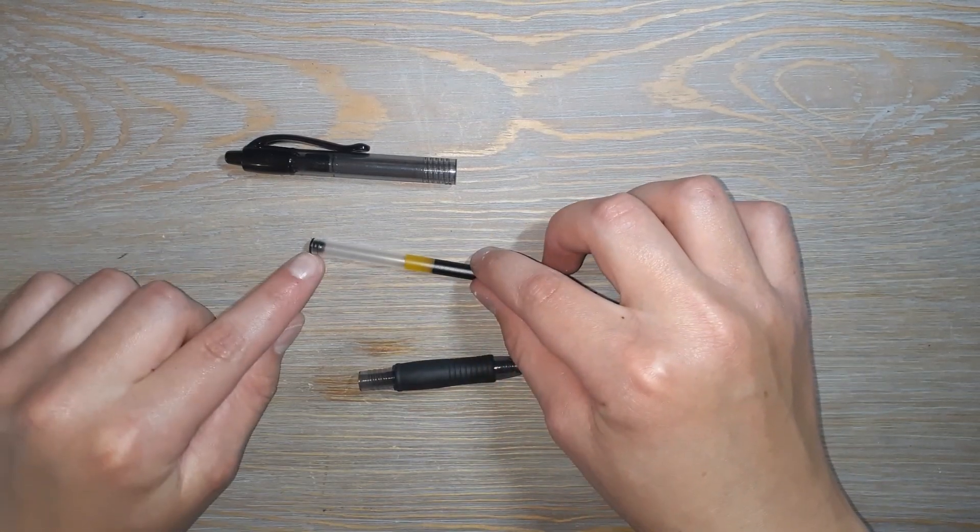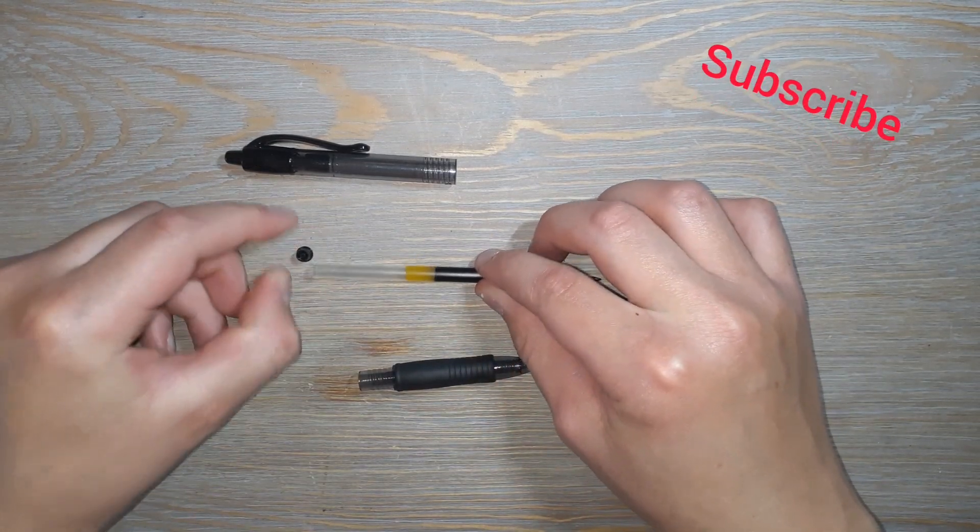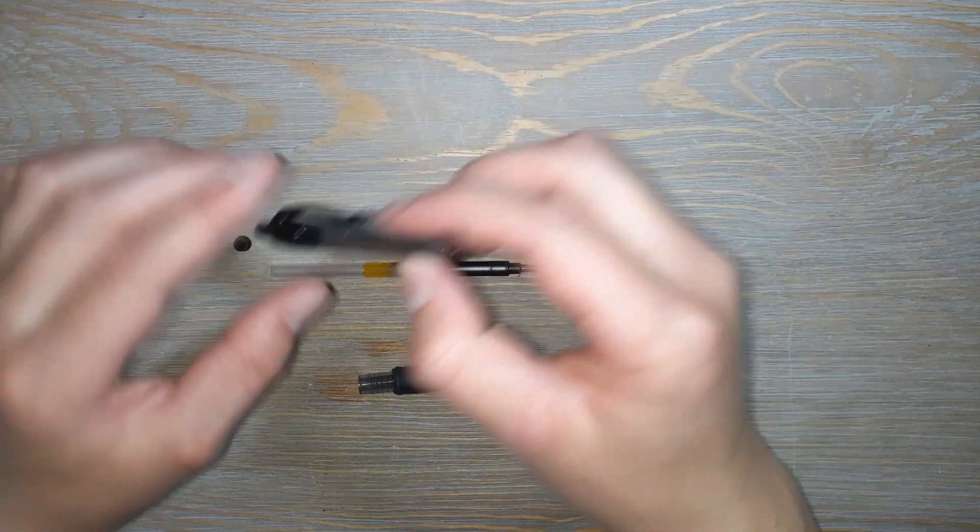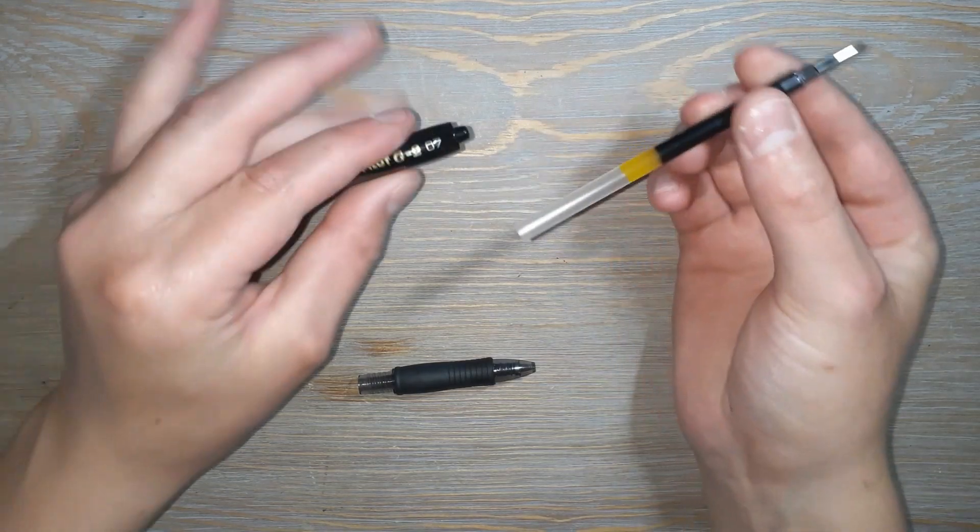Then take this little thing off. Use your fingernail and pop that off. To get the clicking mechanism out of here, I'm going to push with the bottom of the ink cartridge.